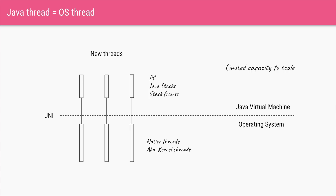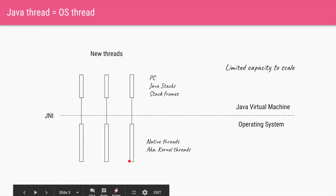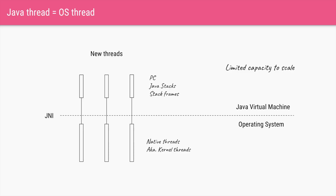Java itself will have variables for every thread like program counter, Java stacks, stack frames and so on, but for every thread there will be a corresponding OS thread which consumes a lot of memory. That limits the number of active threads you can have in your JVM, so you cannot have tens of thousands of active threads in Java — it will throw an OutOfMemoryException and your program will shut down.